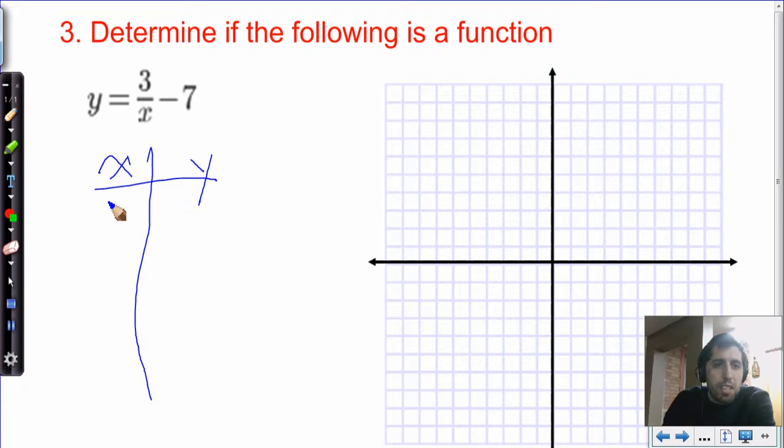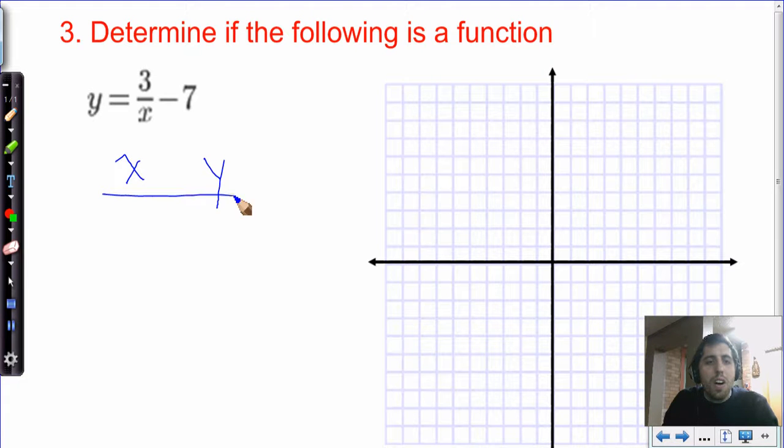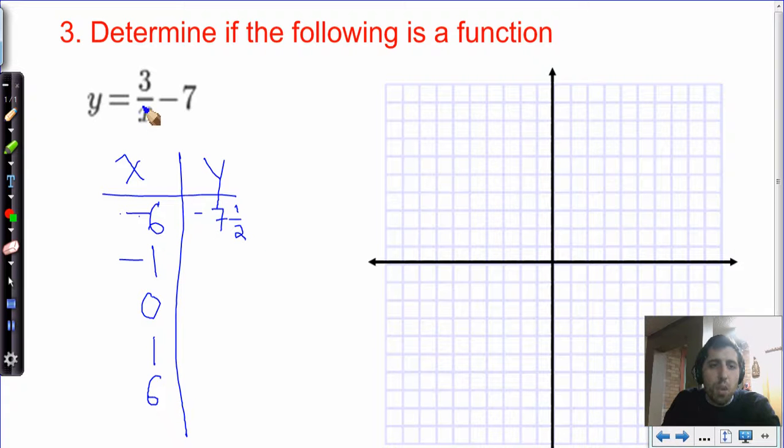Let's see what this actually looks like when we plug in some numbers. So let's do negative 6, negative 1, 0, 1, and 6. In the graph, that's what it means. We'll see what it looks like. If 3 is divided by negative 6, you can simplify that. That 3 sixths is 1 half, but the negative denominator means it's going to be negative 1 half. If you have negative 1 half minus 7, negative 1 half plus negative 7, negative 7 and a half. Okay. What about negative 1? Negative 1, 3 divided by negative 1 is negative 3. Negative 3 minus 7 is negative 10.